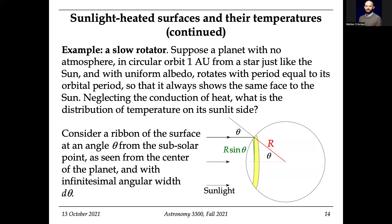Let's go back a step and think about how we're going to do this. I want to know how the temperature varies from the sub-solar point to the poles. When I'm at the equator I'm absorbing straight on, but when I go up I'm absorbing less light than I could while still being able to radiate as much as I want. So I expect the temperature to go down as a function of angle. I want some function that describes the surface in this little ring, and in order to do that I need to describe the geometry.